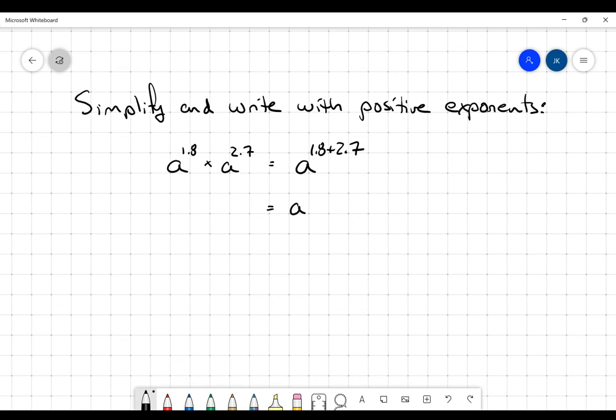And so really the only work that's required of us is to add 1.8 and 2.7. If you take a couple of moments there, I think you'll see that that's going to be 4.5. So the answer to this is going to be A to the 4.5. And notice we've got a positive exponent, so we've done what we've been told to do.